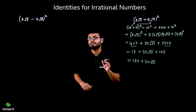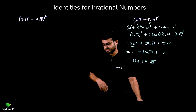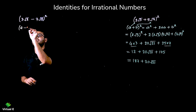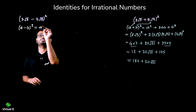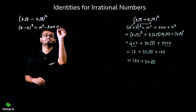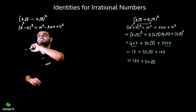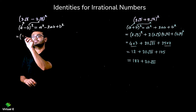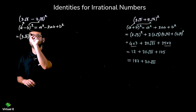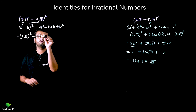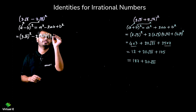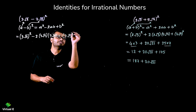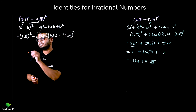Now let's discuss how we deal when we have minus. It's similar — we just put the negative sign, and the rest of the calculation remains the same. The identity is (a - b)² = a² - 2ab + b². Here a = 3√2 and b = 7√5. So we get (3√2)² - 2·(3√2)·(7√5) + (7√5)².